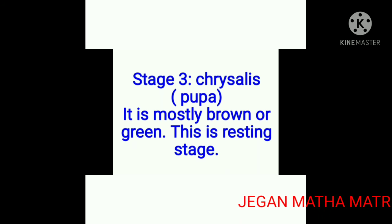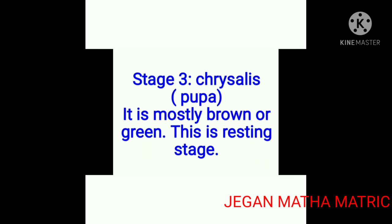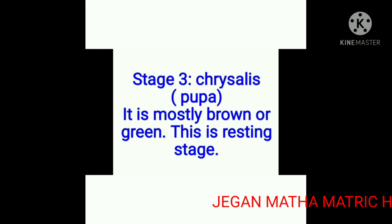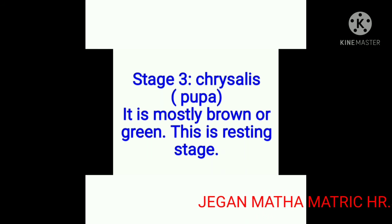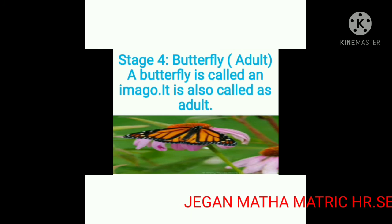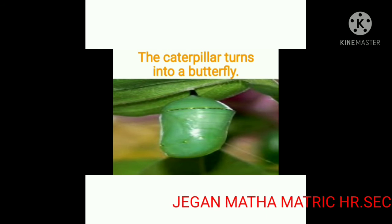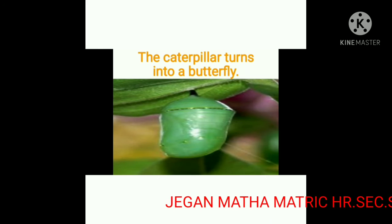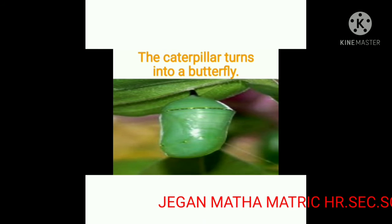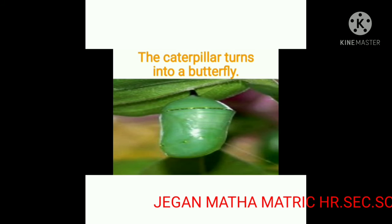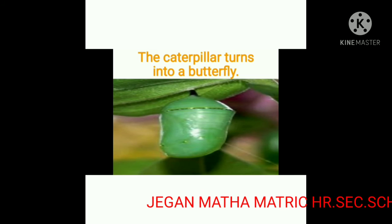The third stage is named chrysalis, also called pupa. It is mostly brown or green in colour. This stage is a resting stage as well as a changing stage. In this stage, the caterpillar turns into a butterfly.